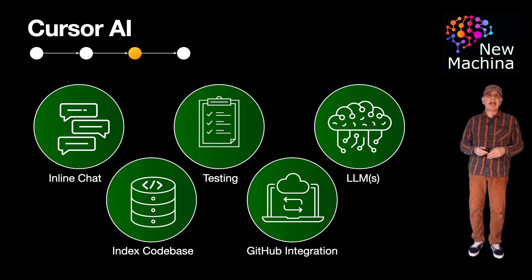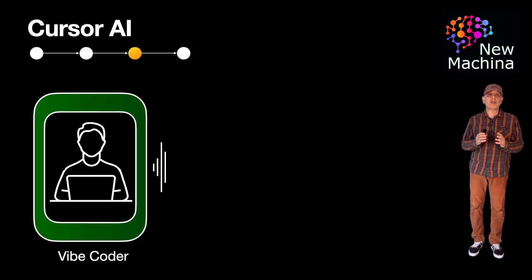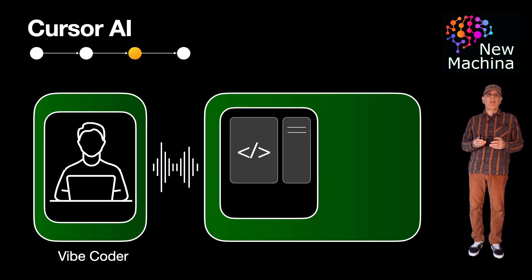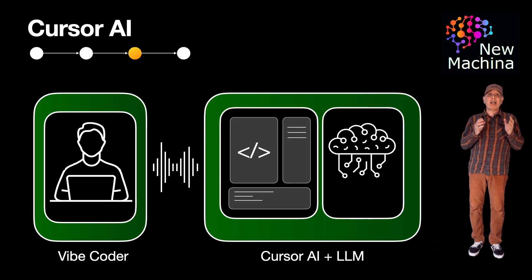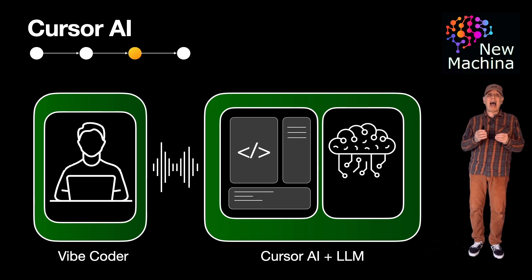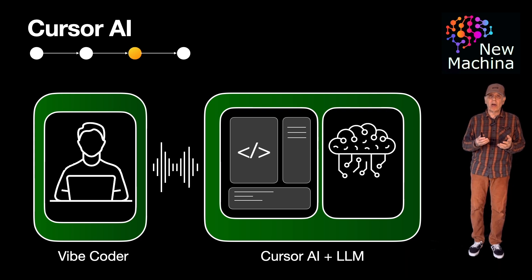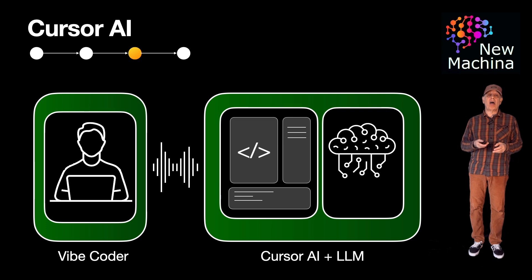Going back to my earlier question — how does Cursor AI enable Vibe Coding? If you're not familiar with Vibe Coding, it's a flow-based conversational style of programming where you interact with an AI assistant in your code editor while building software.